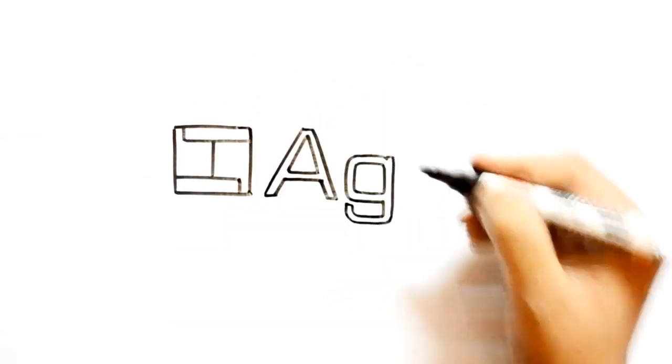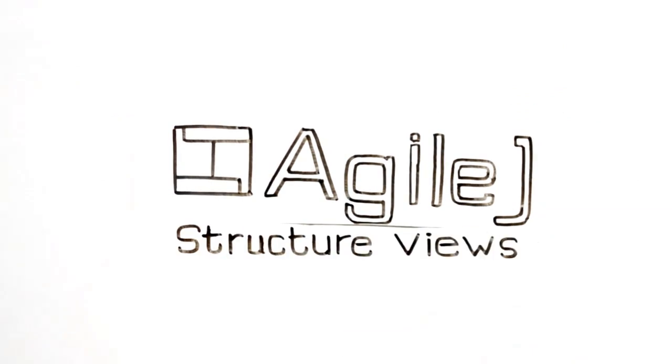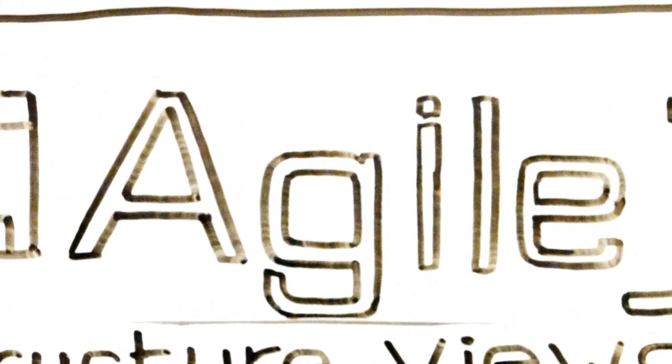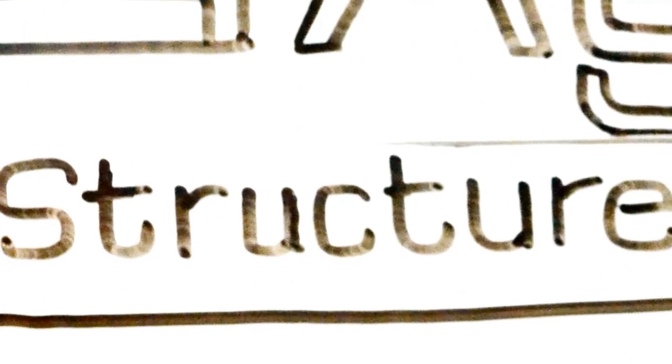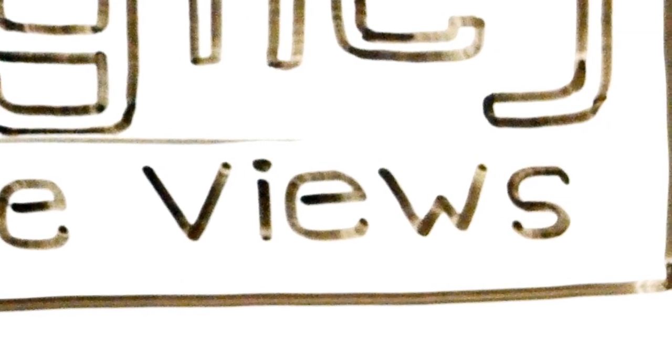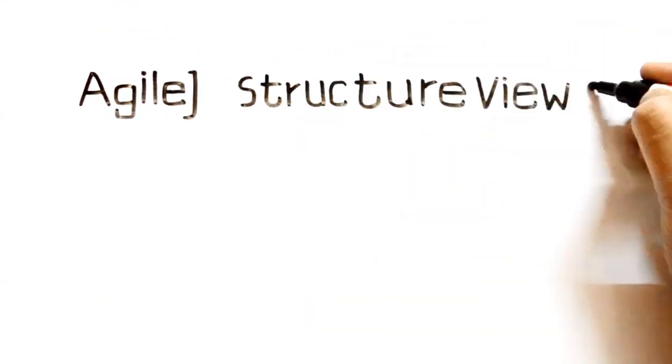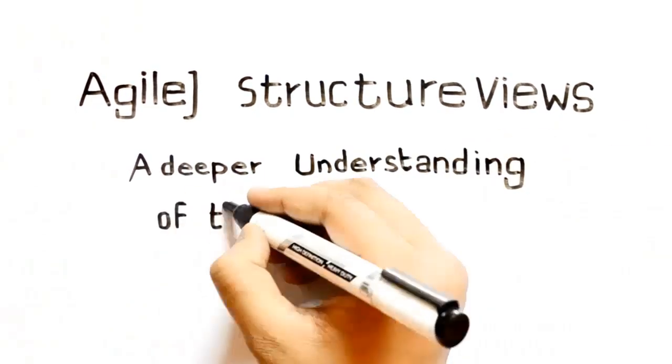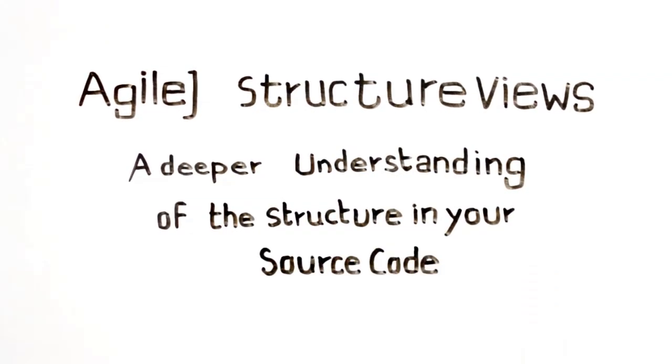The result we call Agile J structure views. Agile because that's the main type of project we support. J because we hold loyal to Java. Structure because structure is what class diagrams show. Views because they are reverse-engineered only. Agile J structure views—for a deeper understanding of the structure in your source code.